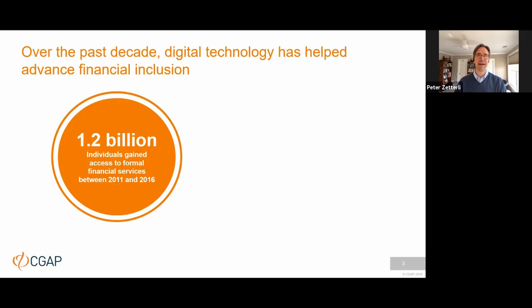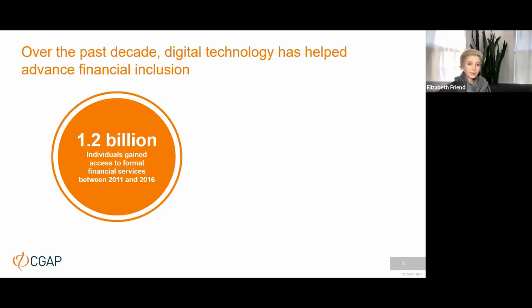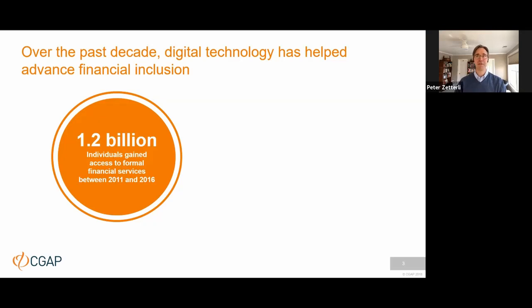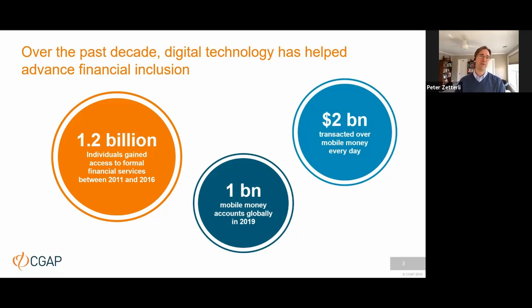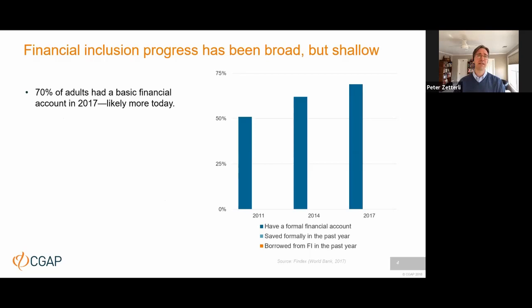The current state of inclusion is partly a good story. Over the last 10 years we've made great progress — we've seen over a billion individuals gain access to formal financial accounts for the first time, just between 2011 and 2016. That is partly thanks to mobile money, which is a prime example of a tech-enabled business model innovation that has been really transformative. We now have over a billion mobile money accounts worldwide and nearly two billion dollars transacted on mobile money every day.